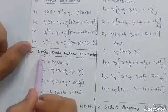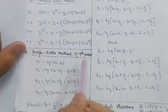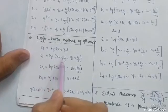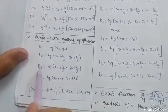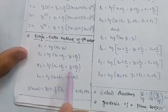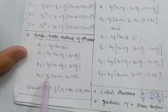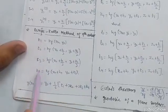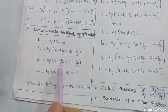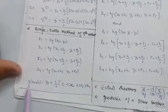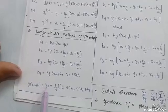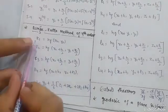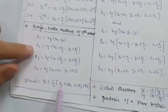The Runge-Kutta method of fourth order: k₁ = h·f(x₀, y₀), k₂ = h·f(x₀ + h/2, y₀ + k₁/2), k₃ = h·f(x₀ + h/2, y₀ + k₂/2), k₄ = h·f(x₀ + h, y₀ + k₃). Once you compute k₁, k₂, k₃, k₄ by substituting the given values, the final formula is: y(x₀ + h) = y₀ + (1/6)(k₁ + 2k₂ + 2k₃ + k₄).